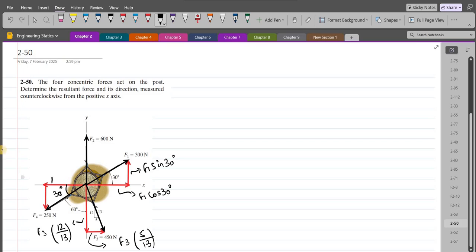The horizontal component of the F4 force is F4 times cosine 30, and the vertical component of the F4 force is F4 sine 30.